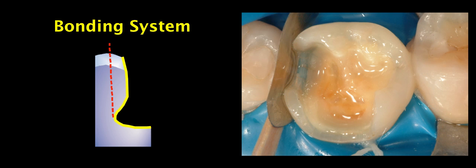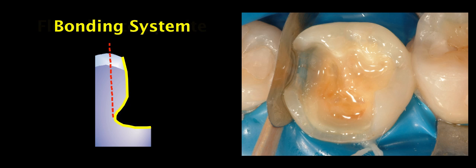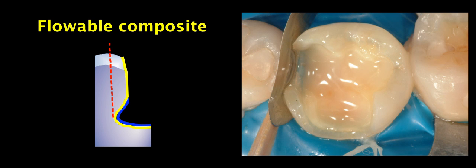The first step is to place our bonding system. For dentin I prefer using two-step self-etching bonding system so we see that after placement they perfectly reflect the light showing they've been applied to all the surface of the dentin. Then a thin layer of flowable composite is being placed on top of it. This can be considered as the last step of our bonding procedure just to stabilize our bonding agent.